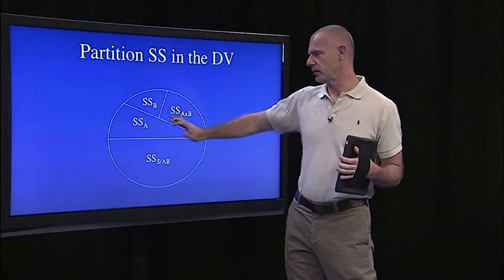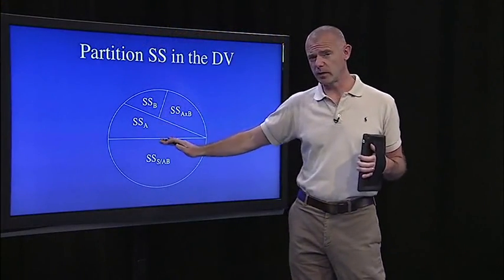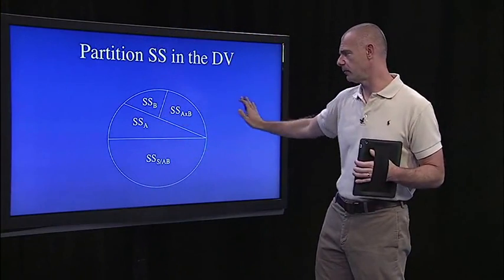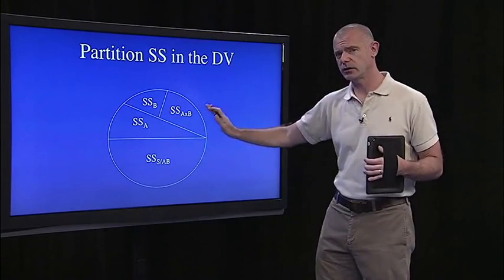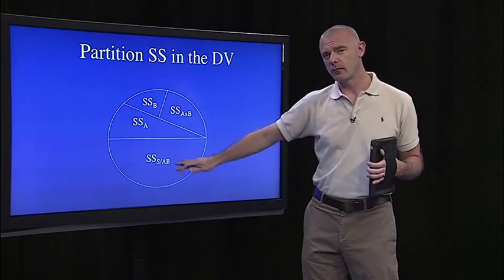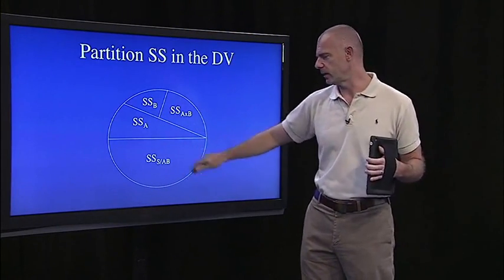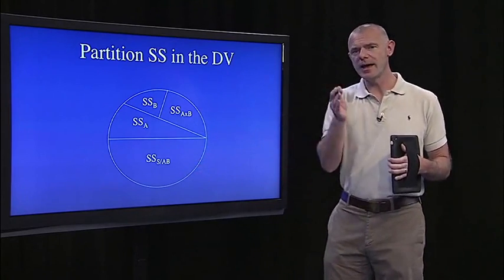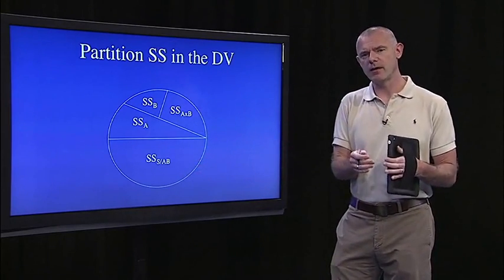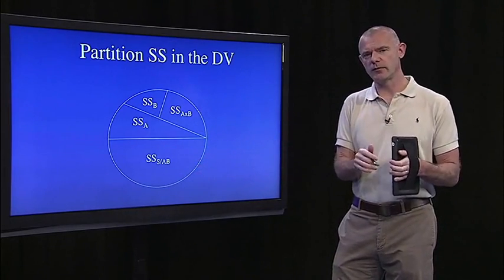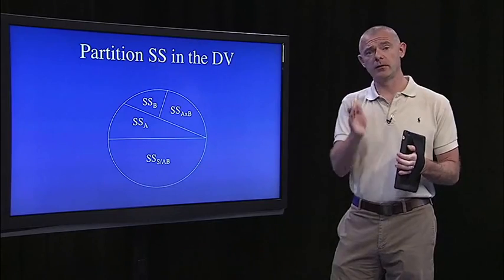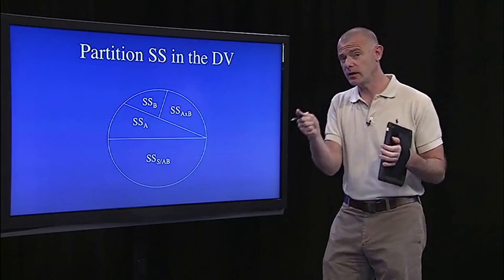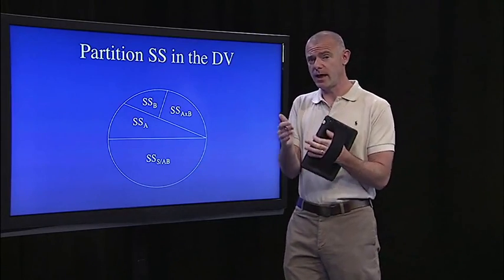So that makes the partitioning of sums of squares really easy and nice. Mathematically, this is such a breeze compared to multiple regression. We'll have some sums of squares due to A, some due to B, some due to the interaction, and the rest is unsystematic. I'm going to use the notation S-within-AB, because now groups are defined by their level on A and their level on B - so it's subjects within a group AB.